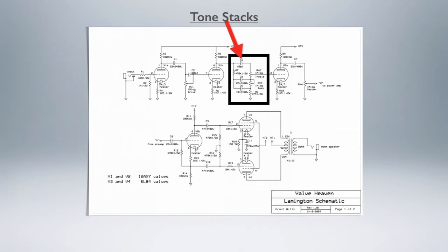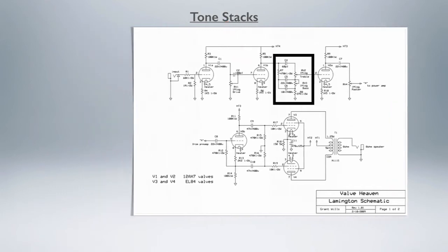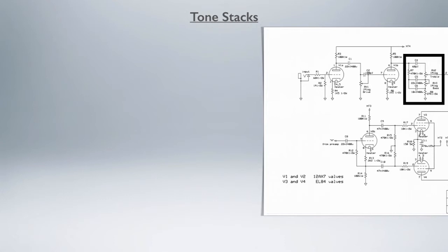In a typical simple guitar amp, you might have a three-band passive tone stack like this. We call them stacks because everything's kind of stacked on top of each other, as you can see in the diagram. All of this basically comes straight from basic electronics theories, just filter theory.